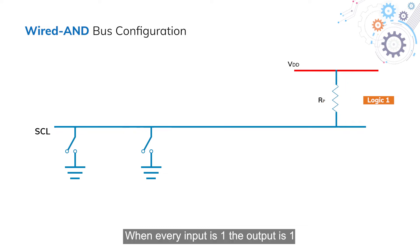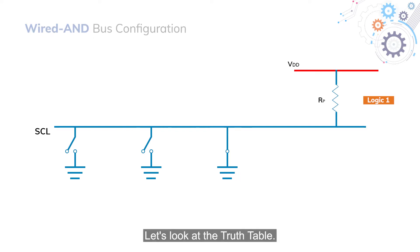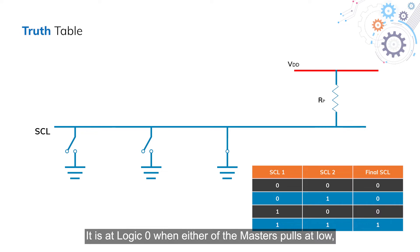When every input is 1, the output is 1. Let's look at the truth table. It is at logic 0 when either of the masters pulls it low. This means that if either of the inputs goes 0, then the output is 0. The line is high only when both lines are high.